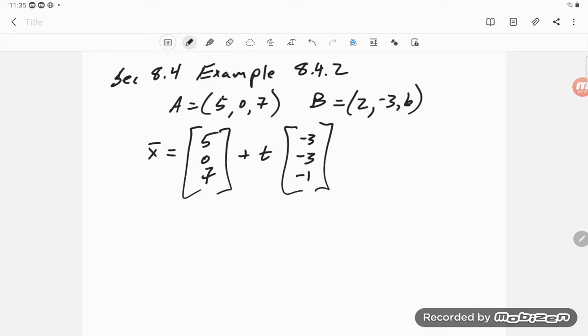And again, I could always just arbitrarily change that to 3, 3, 1, because t can be anything. So there is my equation of my line.